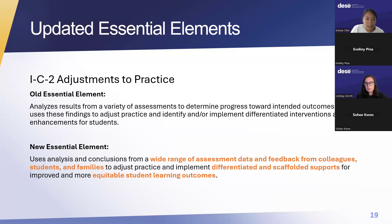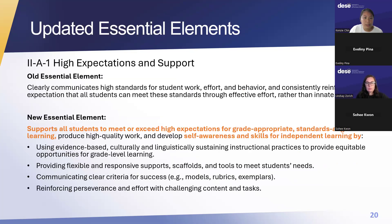The next essential element is adjustments to practice. The new essential element reads: uses analysis and conclusions from a wide range of assessment data and feedback from colleagues, students, and families to adjust practice and implement differentiated and scaffolded supports for improved and more equitable student learning outcomes. The next essential element is high expectations and support, which reads: supports all students to meet or exceed high expectations for grade-appropriate standards-aligned learning, produce high-quality work, and develop self-awareness and skills for independent learning by using evidence-based culturally and linguistically sustaining instructional practices to provide equitable opportunities for grade-level learning, providing flexible and responsive supports, scaffolds, and tools to meet students' needs, communicating clear criteria for success—such as models, rubrics, and exemplars—and reinforcing perseverance and effort with challenging content and tasks.